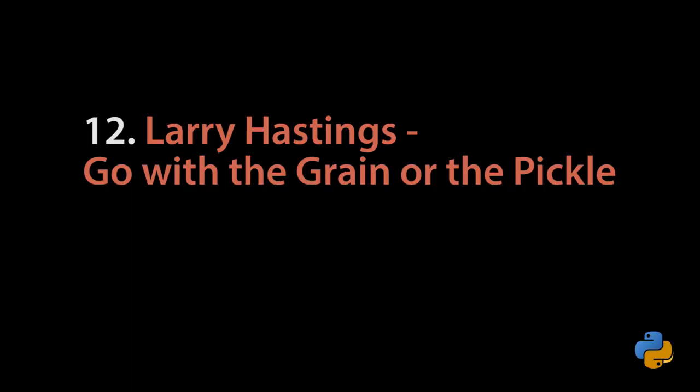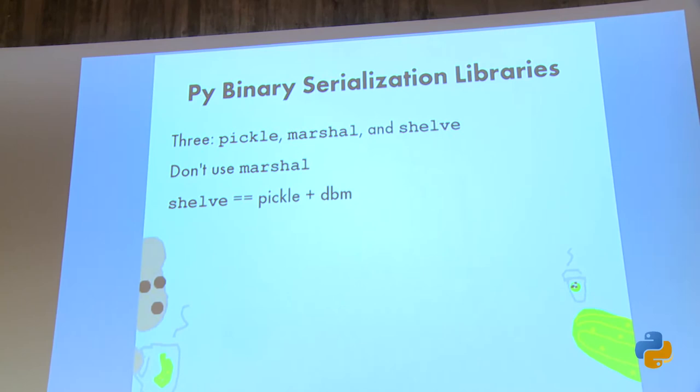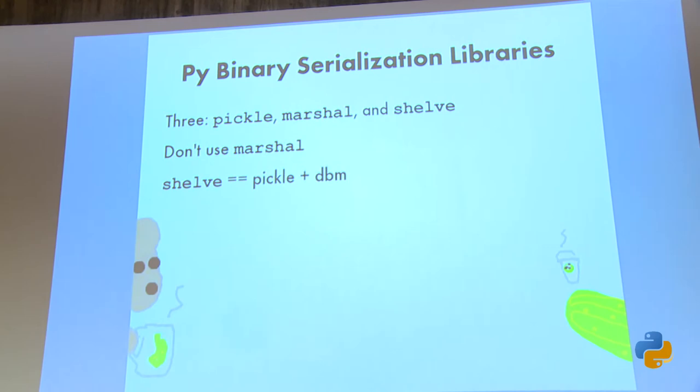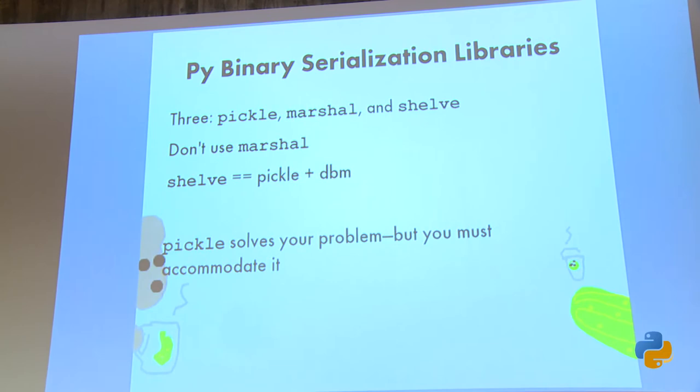This is about pickle. There are three binary serialization libraries built into Python: pickle, marshal, and shelve. Don't use marshal — it's used internally by Python as the format of a .pyc file and it changes between point releases; it's not for you. Shelve is just pickle with the dbm module slapped on top, so it's not getting you anything above pickle itself. If you're going to live with pickle, use pickle directly. But you need to change the way you approach solving your problem — you need to meet pickle in the middle.